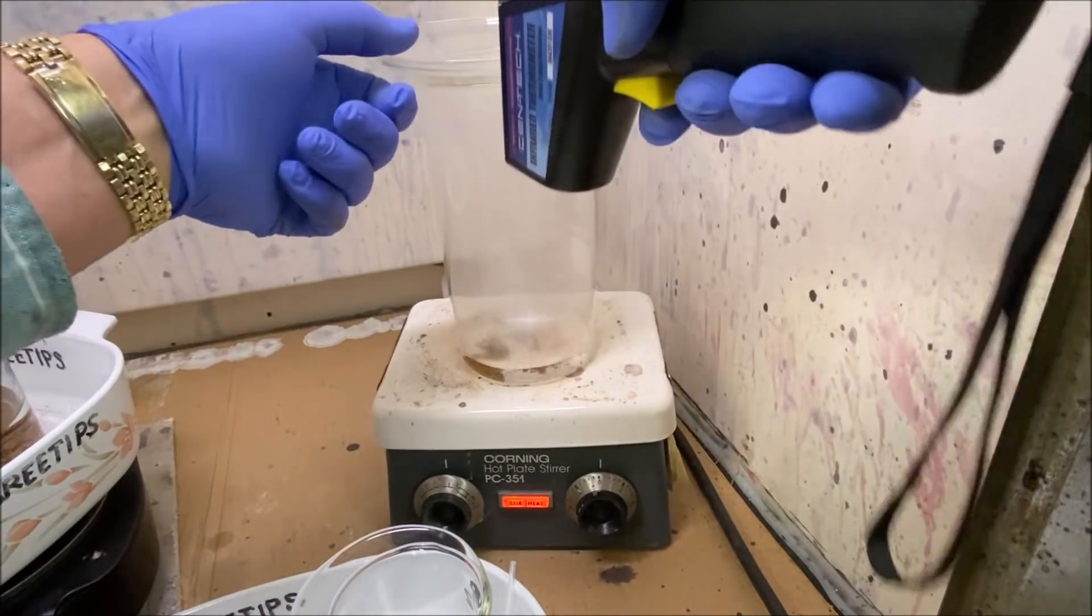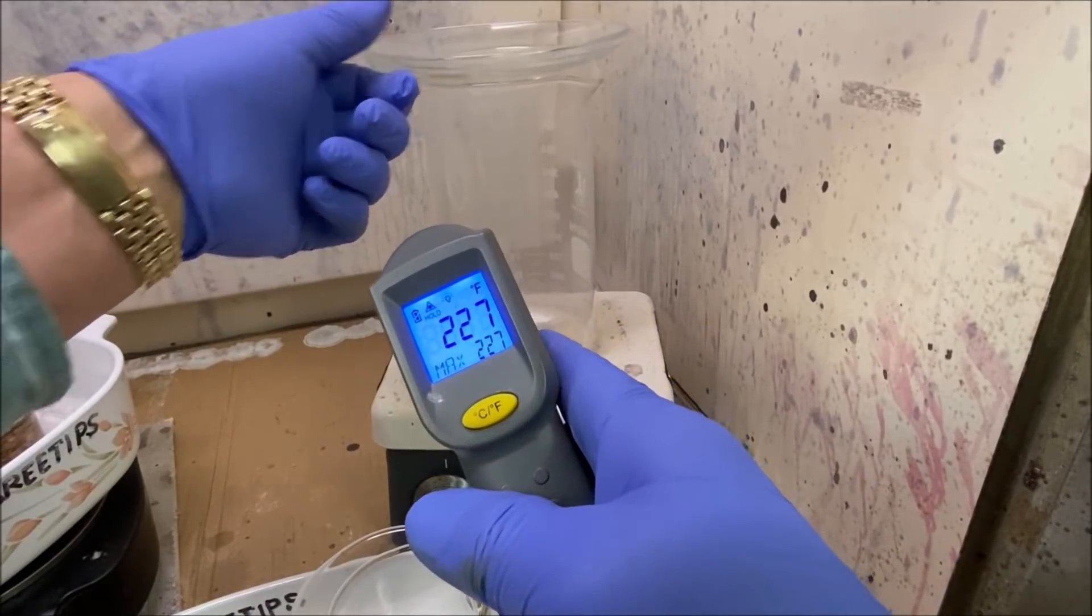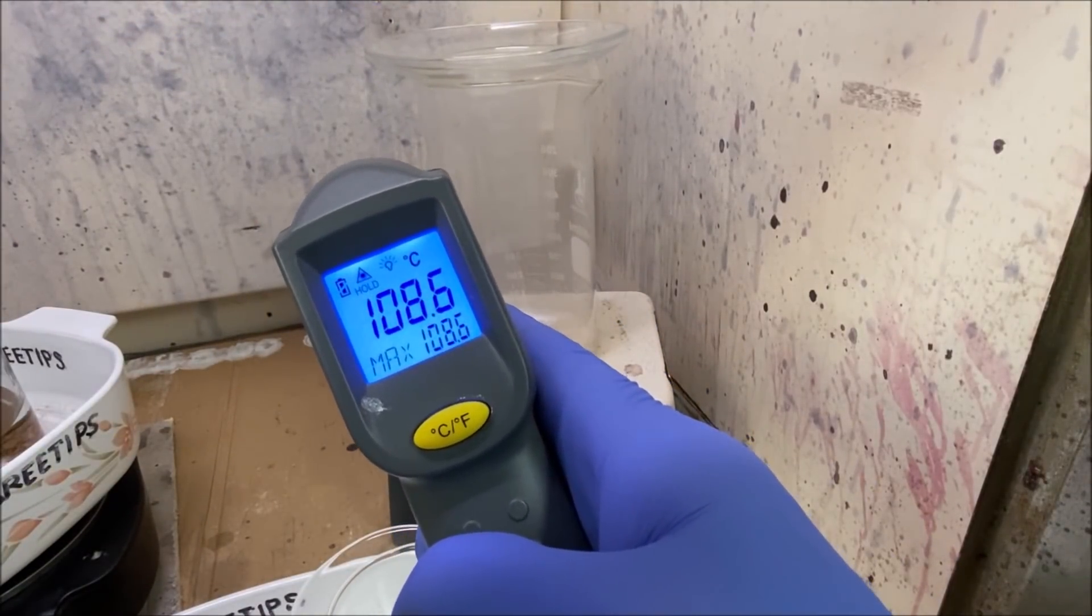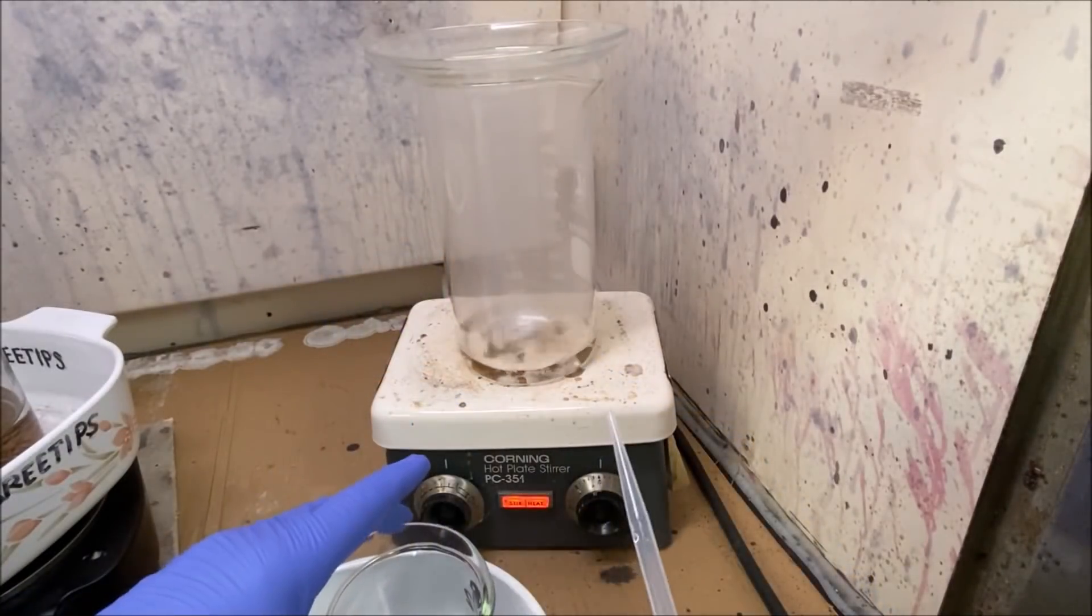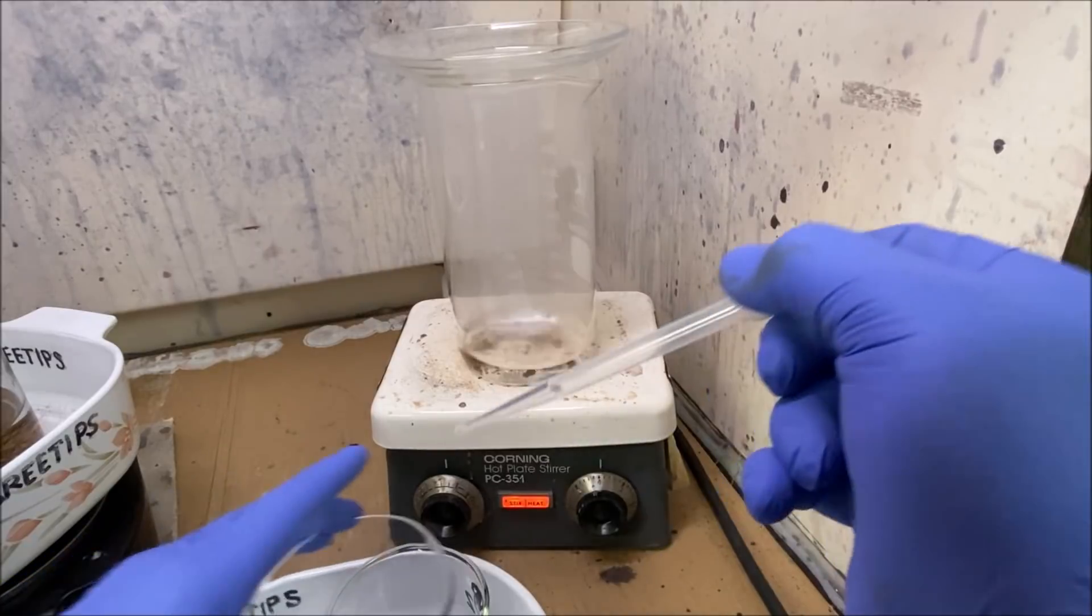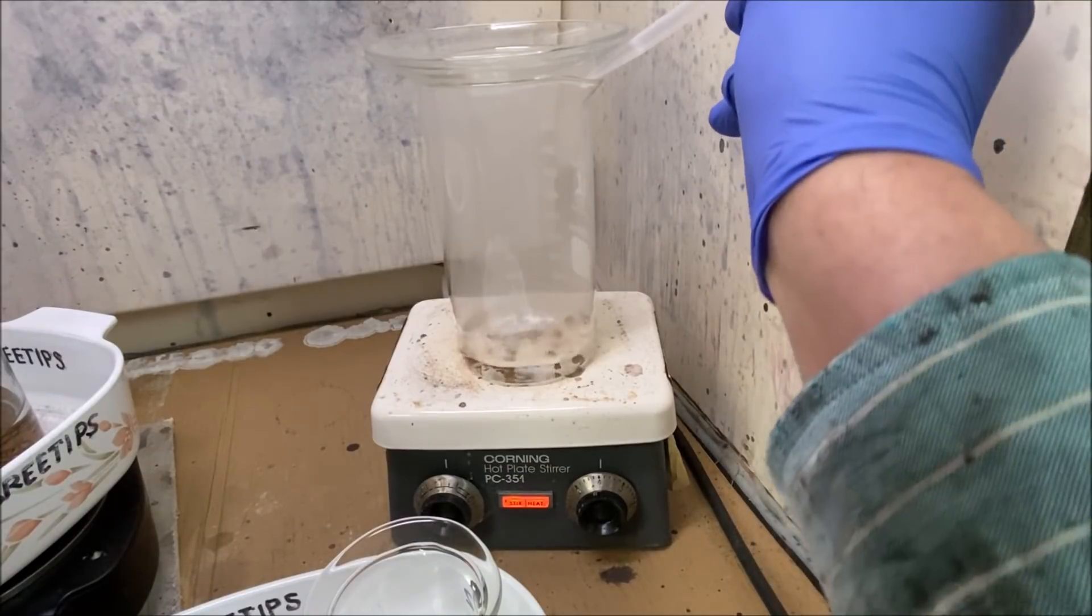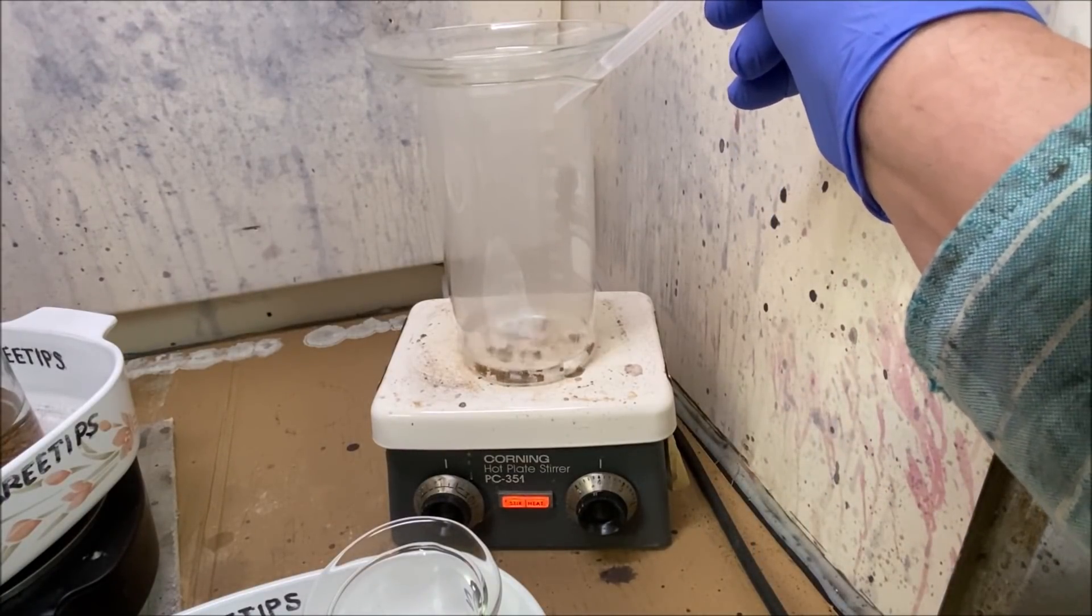It's been on here for about 10 minutes now. I've got 227 Fahrenheit, 108.6 Celsius. All right, I'm going to add a little bit of the 29 percent hydrogen peroxide, maybe a half a milliliter, just one drop at a time. I don't know how this is going to react.